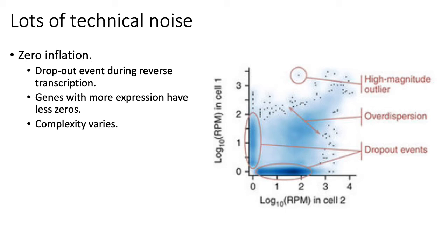What these bands represent is basically zero inflation or dropout events. The band on the x-axis represents a whole bunch of genes where there was some non-zero expression measured in cell two, but you measured zero for all of those genes in cell one. Similarly, the band on the y-axis represents genes where you had some non-zero expression in cell one, but you measured exactly zero in cell two. A lot of these dropout events are not that reproducible.